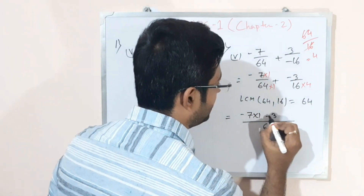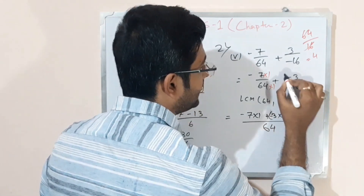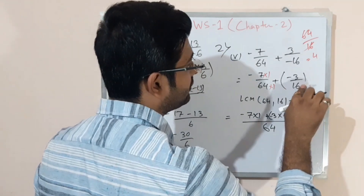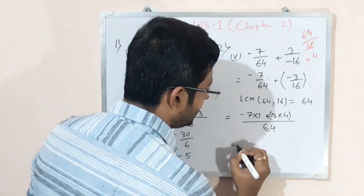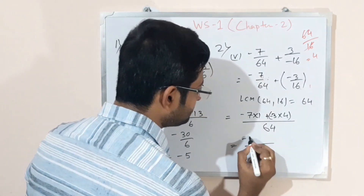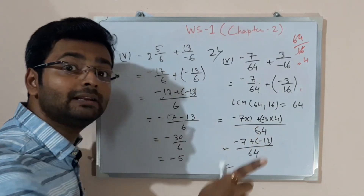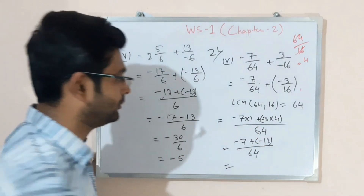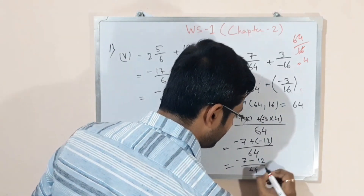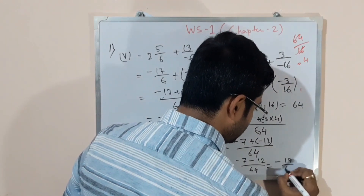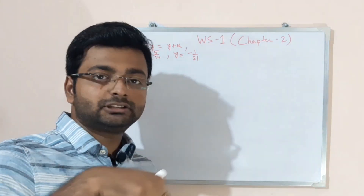Be careful — there is a plus of minus sign. Equals to: notice the bracket with minus sign and the plus, so plus minus gives minus. That gives minus 7 minus 12 by 64, which equals minus 19 by 64 as the answer.